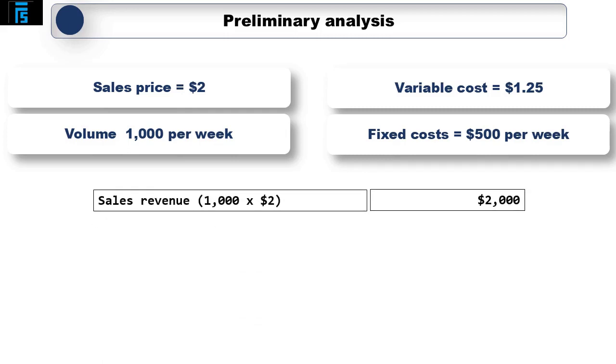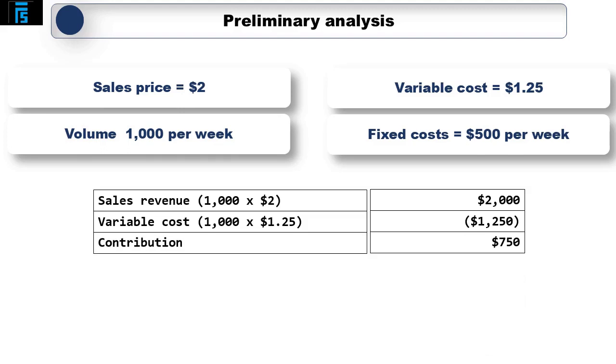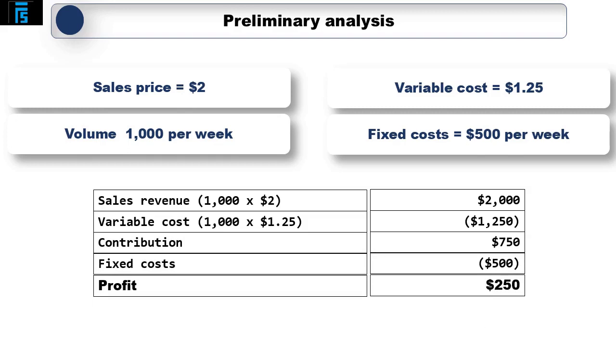His forecast profit would be sales revenue of 1,000 times $2 is $2,000. Variable cost 1,000 times $1.25 is $1,250, giving us a contribution of $750. Less fixed costs of $500, giving us a profit of $250.